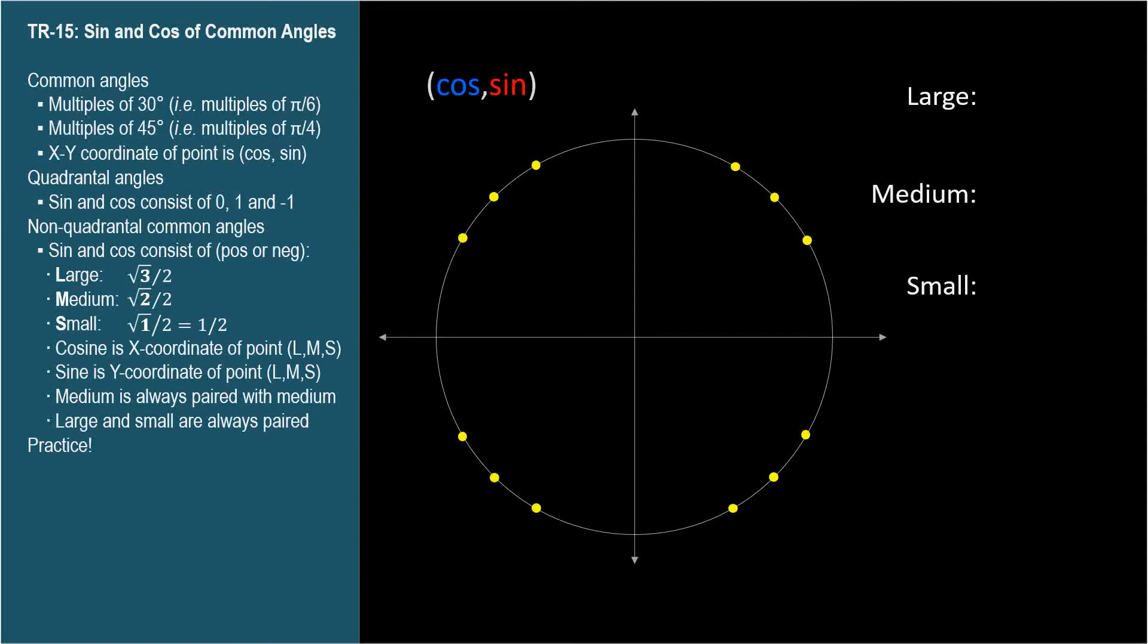The large number is the square root of three over two. The medium number is the square root of two over two. And the small number is the square root of one over two. But since the square root of one is just one, the small number simplifies to one half.